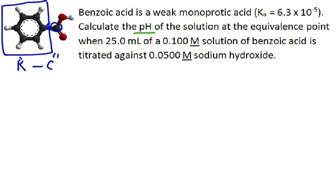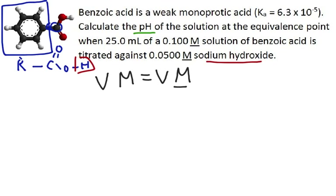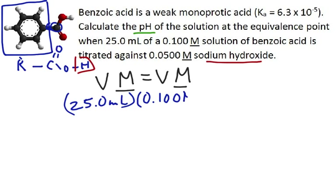So this would be R — the rest of the molecule — hooked to a C double bond O, OH. This H is the acidic H that comes off. We have our strong base and our weak acid. The first thing is, how much of this strong base do we really need? We're going to use a V·M equals V·M calculation, where the volume times molarity of our acid equals the volume times molarity of our base. Since both acid and base are monoprotic, we can use the concentrations given. The volume of the acid is 25 milliliters at 0.100 molar; the volume of the base is what we're looking for, and its concentration is 0.0500 molar.